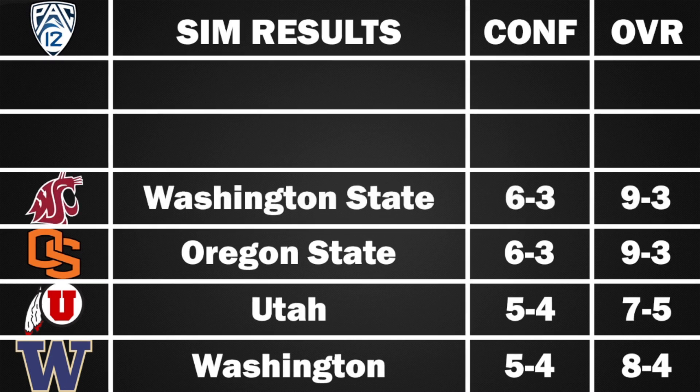Washington State is your surprise team — I don't think anyone expects them to go 9-3, but the simulation had them having a really good year. Wins over Colorado State, Wisconsin, Northern Colorado, UCLA, Arizona, Arizona State, Stanford, Cal, and Colorado. Losses came to Oregon State, Oregon, and Washington. Someone always surprises in the Pac-12, and maybe it's Washington State.